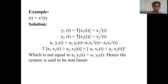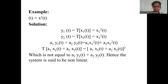For example, given Y(t) = X²(t), we have Y1(t) = X1²(t) and Y2(t) = X2²(t). Applying the superposition and homogeneity principle gives T[A1·X1(t) + A2·X2(t)] = [A1·X1(t) + A2·X2(t)]². Comparing this with A1·Y1(t) + A2·Y2(t), the two expressions are not equal, so the system is said to be non-linear.